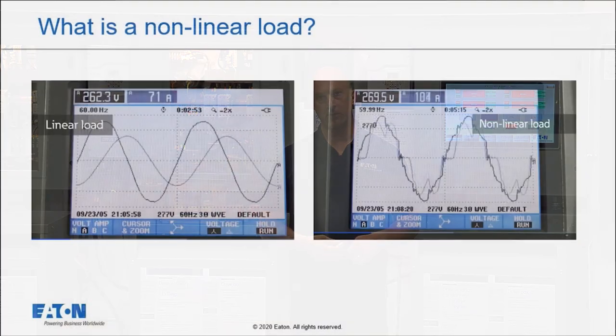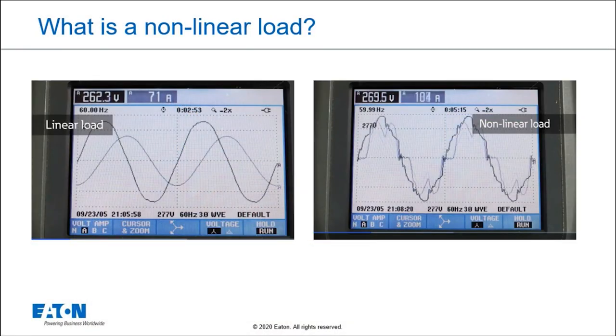Let's take a look at this picture. Right here on the left we have what we would call a linear load. The voltage, the higher waveform in this case, is a nice clean 60 Hz sine wave. The current is also a nice clean 60 Hz sine wave, meaning the current looks like the voltage. And in fact, when the current looks like the voltage, we call that a linear load.